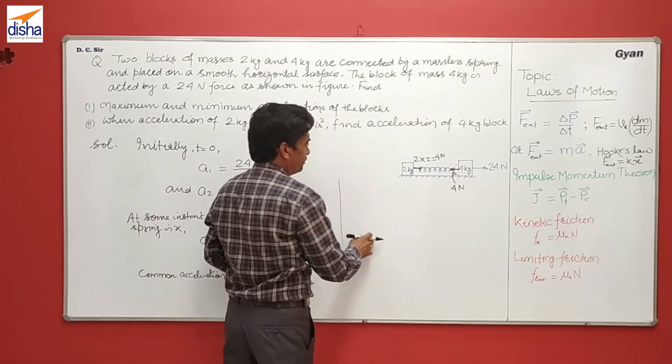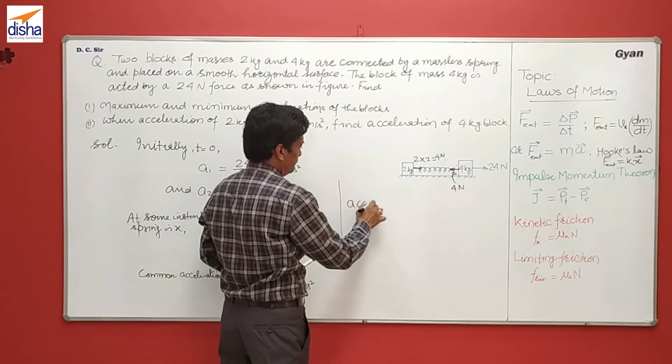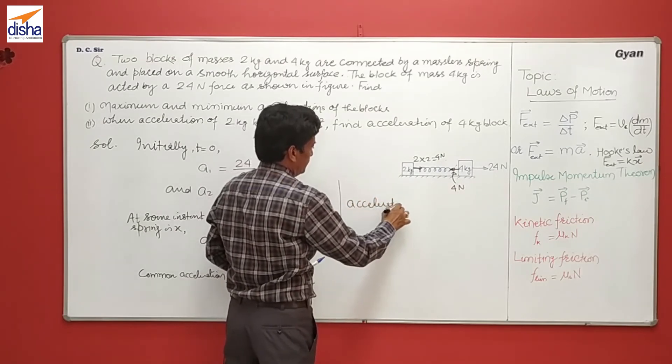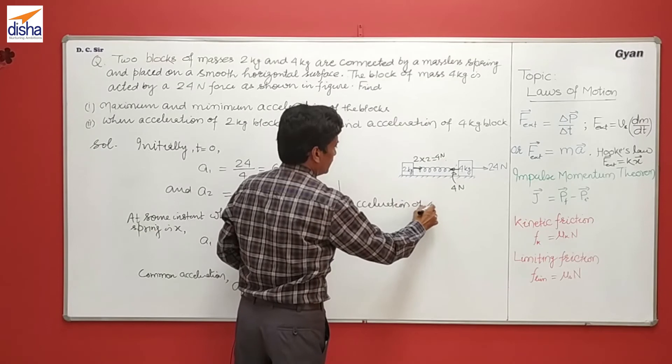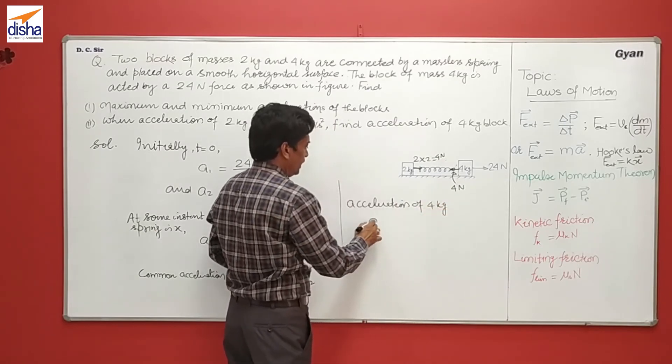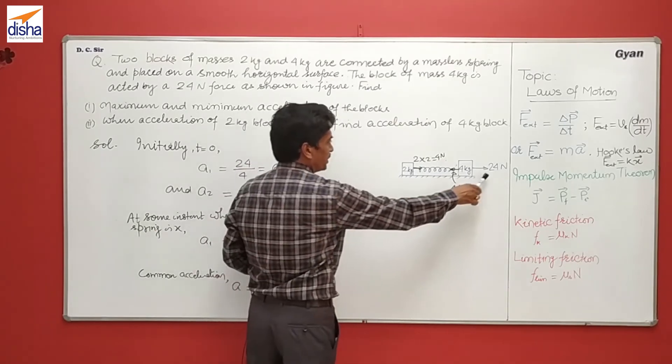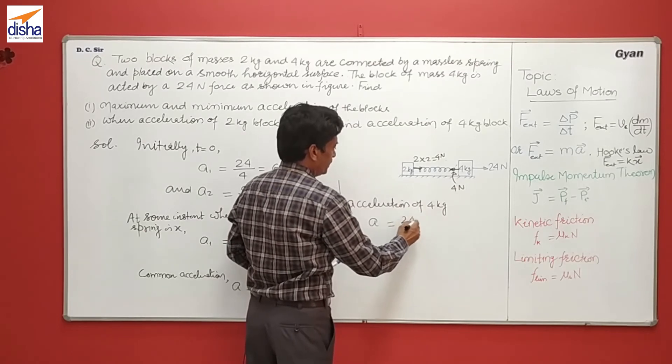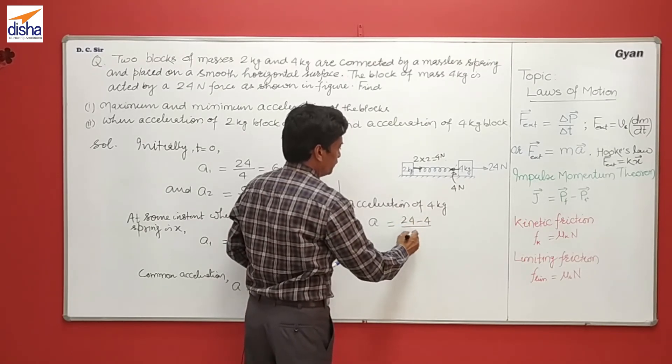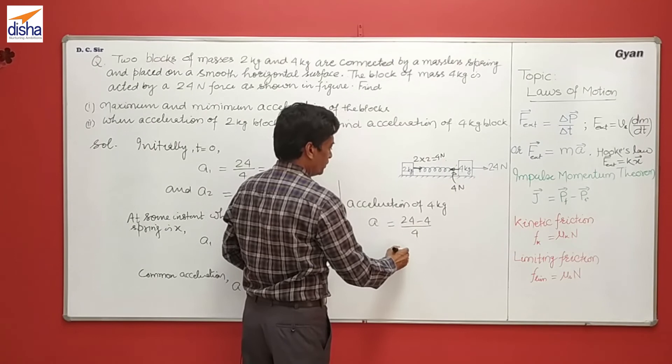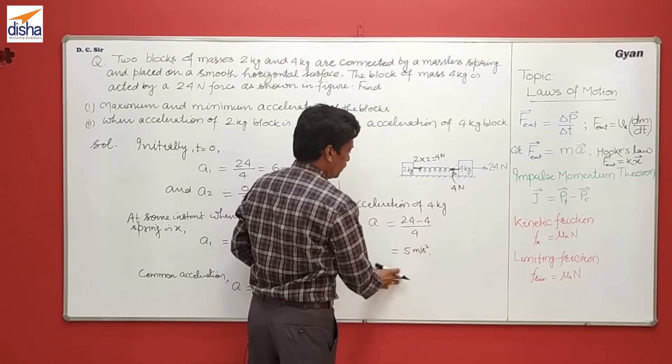So the acceleration of 4 kg at this instant, A equals the net force, which becomes now 24 minus 4 divided by its mass, that is 4. So it will be 20 by 4, 5 meter per second squared.